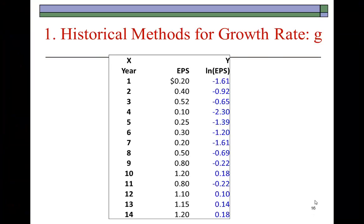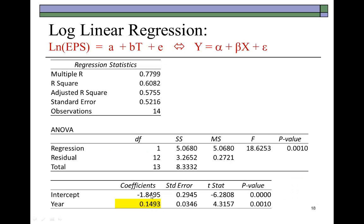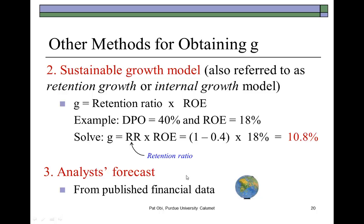Going back to our PowerPoint, that's the summary of the output and the calculation of the growth rate. Other methods for estimating growth rates are the Sustainable Growth Model and Analyst's Forecast. Sustainable Growth says if a firm can assure a fairly steady return on its equity investment and has a constant dividend policy — meaning the dividend payout ratio is constant, in this example 40%, which means the retention ratio would be constant at about 60% — then by multiplying your retention ratio by return on equity, you obtain a sort of internal growth rate, in this example 10.8%. The third is Analyst's Forecast, which you can find from published data, and I'll show you one place that you might find such data on the Internet.